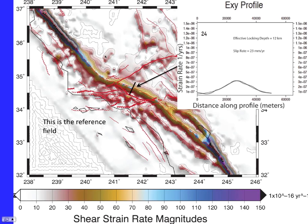One thing we do is estimate the fault slip rate and locking depth using the shear component. There's a lot of off-fault deformation not related to locking on the major strike-slip fault, and that off-fault deformation is embedded in the horizontal velocity field but we don't want to use it when inverting for locking depth and slip rate. By inverting the shear strain rate component associated with pure strike-slip deformation, we're isolating that part of the deformation field associated with locking of the major strike-slip fault. We invert for slip rate, locking depth, and the actual position of the fault, with one result along the Mojave.